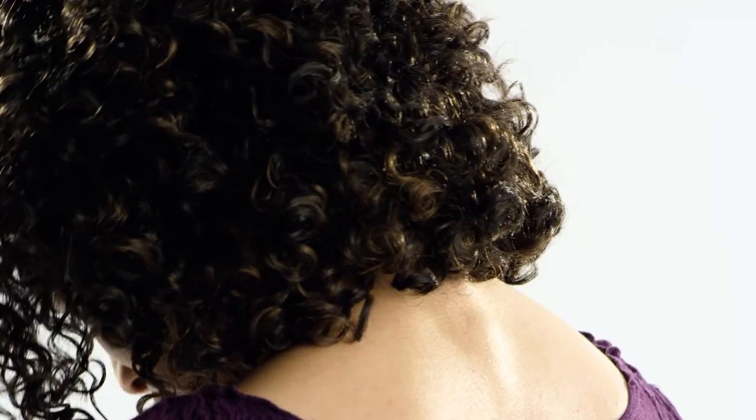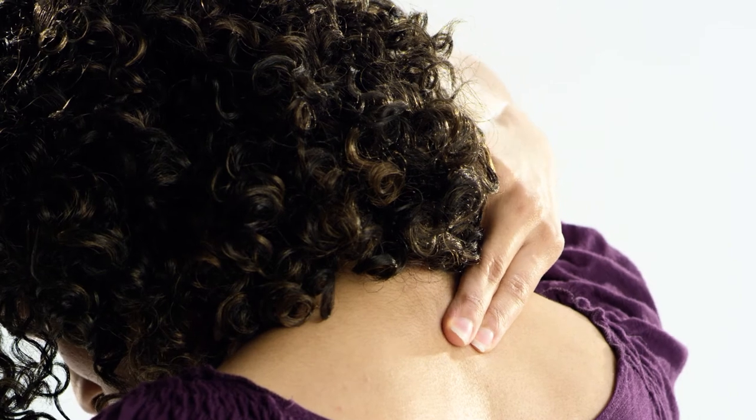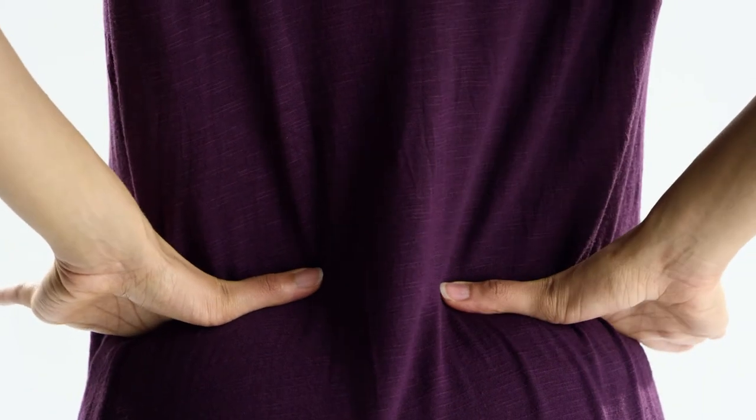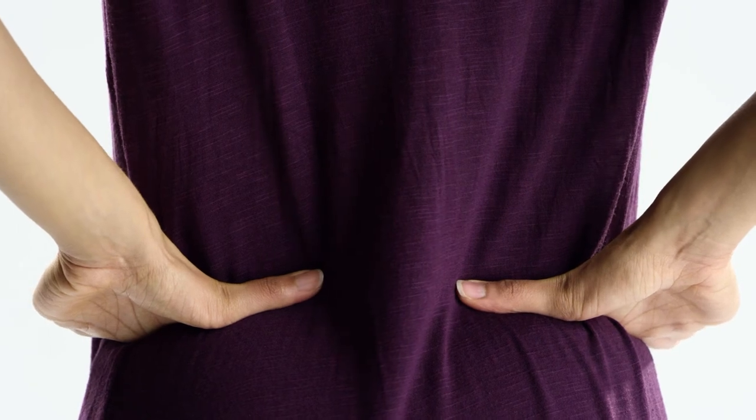Bend your head forward to find the vertebrae that sticks out at the top of your spine. Start your measurement from here. Place your hands flat at the top of your hip bones with your thumbs pointing towards your spine.